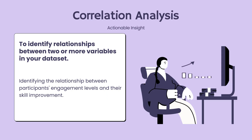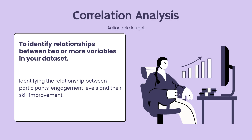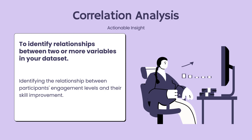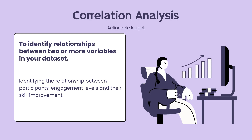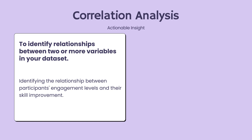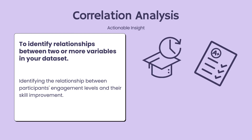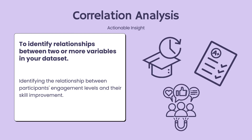Now comes the correlation analysis. This technique is valuable for identifying how different variables interact, guiding program enhancements and precise interventions. It uncovers the relationship between various aspects of our training programs at Future Upskill. For example, we can determine the most effective training duration, grade, or hours of engagement by examining the correlation between outcomes and these aspects.